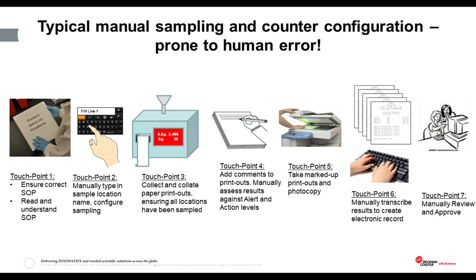They then print sample results from each location, handwrite comments onto the printout, and sign it with their name to make it attributable. At the end of each day, they photocopy all of the printouts and then manually type the results from every piece of paper into an electronic record. The electronic record is then reviewed by the supervisor to ensure all samples have been taken and that the data in the electronic record matches the printout. It's an incredibly manual process with thousands of samples, lots of paper, and manual data transcription — and the opportunity for human error to impact data integrity is very high.